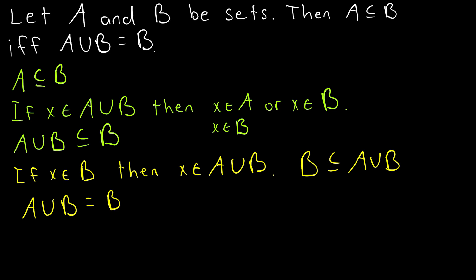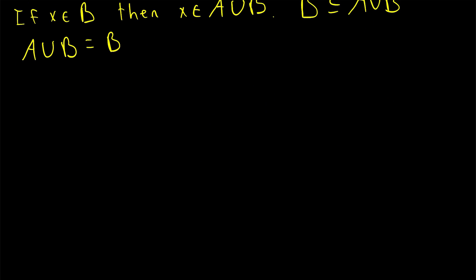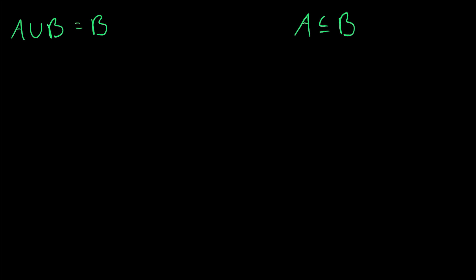But let's jump into the next direction of the proof. We need to show that if A union B is equal to B, then A is a subset of B. So we suppose A and B are two sets, and we assume that A union B is equal to B. And we want to prove that A is a subset of B.